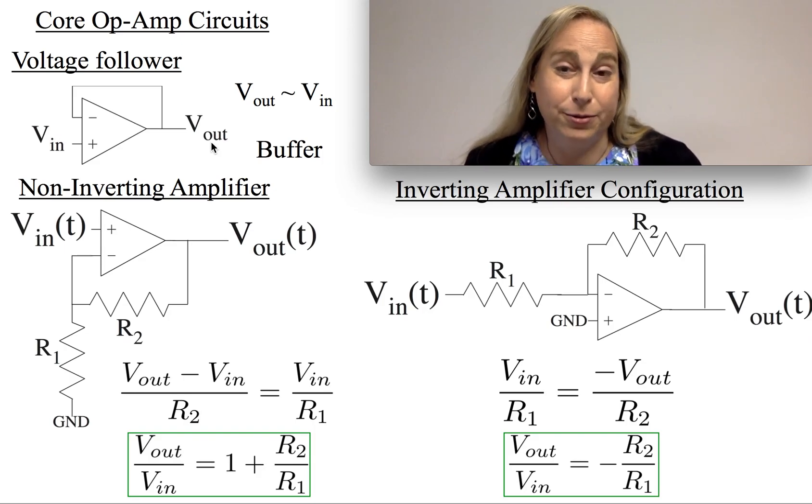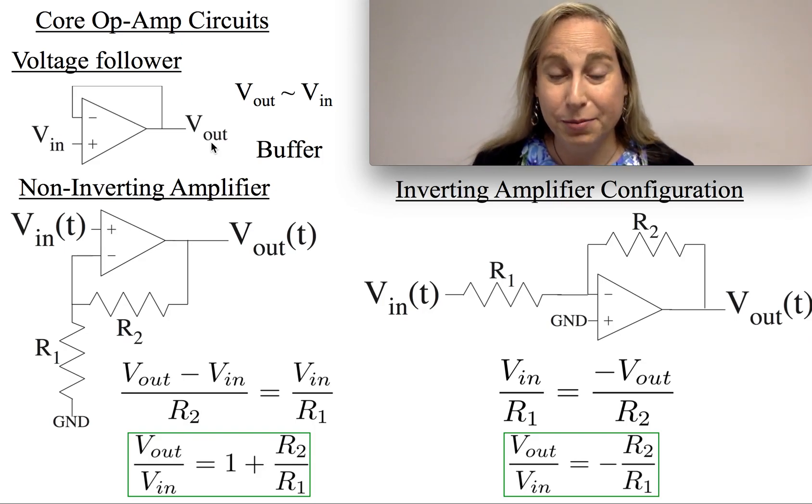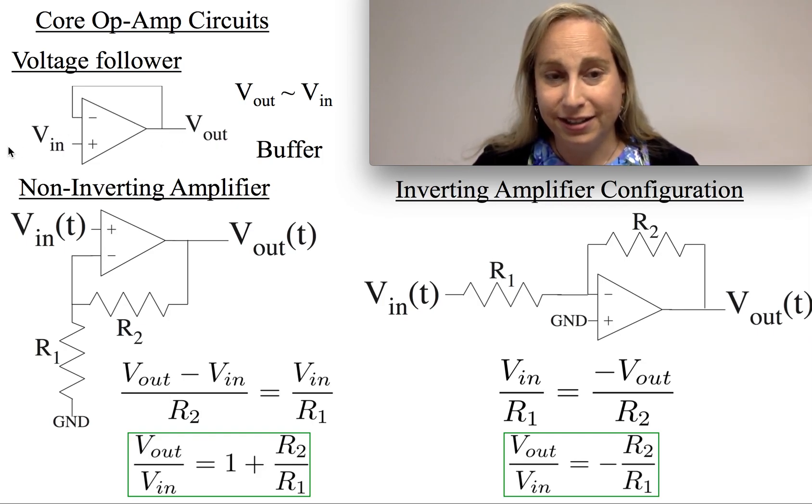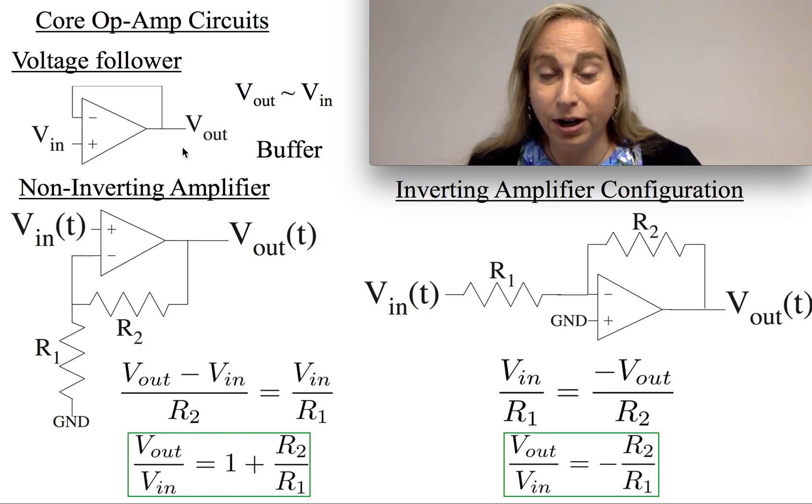Now you might say, why on earth would I make a circuit where the input is equal to the output? I could have used a wire. Except remember, the op-amp doesn't actually take any current from here. Anything that's going on over here isn't being loaded by what's going on over here, so it gives me a way to isolate or separate the two circuits.